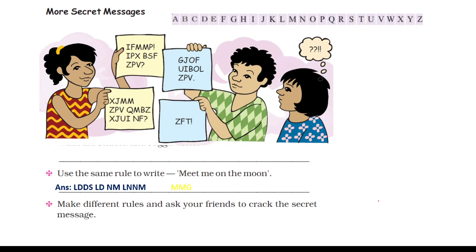Moving to the next page: use the same rule to write 'meet me on the moon' as a secret message. For M, the previous letter is L. For E, the previous letter is D — and since E appears twice, I write D-D. For T, the previous letter is S. So far 'meet' is written as L-D-D-S. Continue in the same way to complete the full message 'meet me on the moon.'